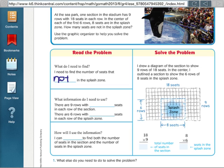What information do I need to use? There are 9 rows with 18 seats in each row of the section, and there are 6 rows with 8 seats in each row for the splash zone.